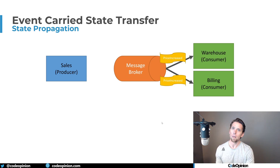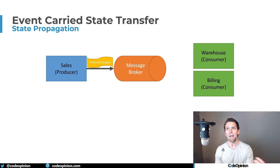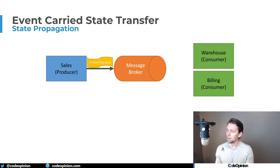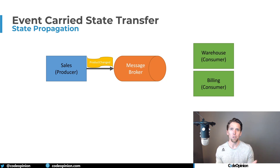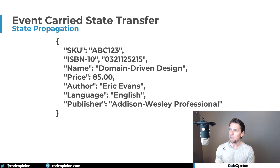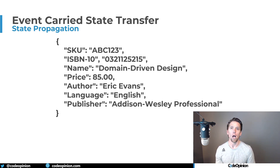Another option, depending on how sales is making its state changes, is that it may not be fine-grained enough to even know it was a price increase. Check out my video on task-based UIs and CQRS, because if you're doing more CRUD-related things, you're not necessarily going to know explicitly what happened. In that case, you end up publishing an event like 'product changed' or 'product updated,' and rather than a specific change, you're publishing the entire new version of what that entity looks like — maybe the old version and the new version — and these other services consume it to update their local cache copy.